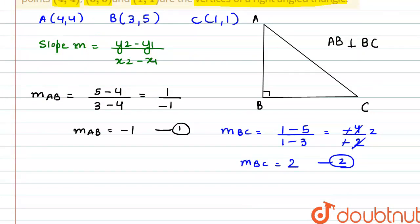Now, we also have to find M of CA, that is slope of CA, and that is equal to 4 minus 1 divided by 4 minus 1. So 4 minus 1 is 3 divided by 4 minus 1 is 3, so this cancels out. And our M of CA here comes out to be 1. This is our equation 3.